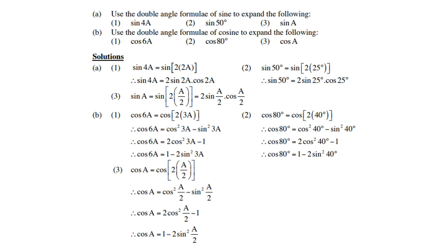Cos of a: since a = 2 × (a/2), it equals cos²(a/2) minus sin²(a/2), which is the same as 2 cos²(a/2) minus 1, or 1 minus 2 sin²(a/2).